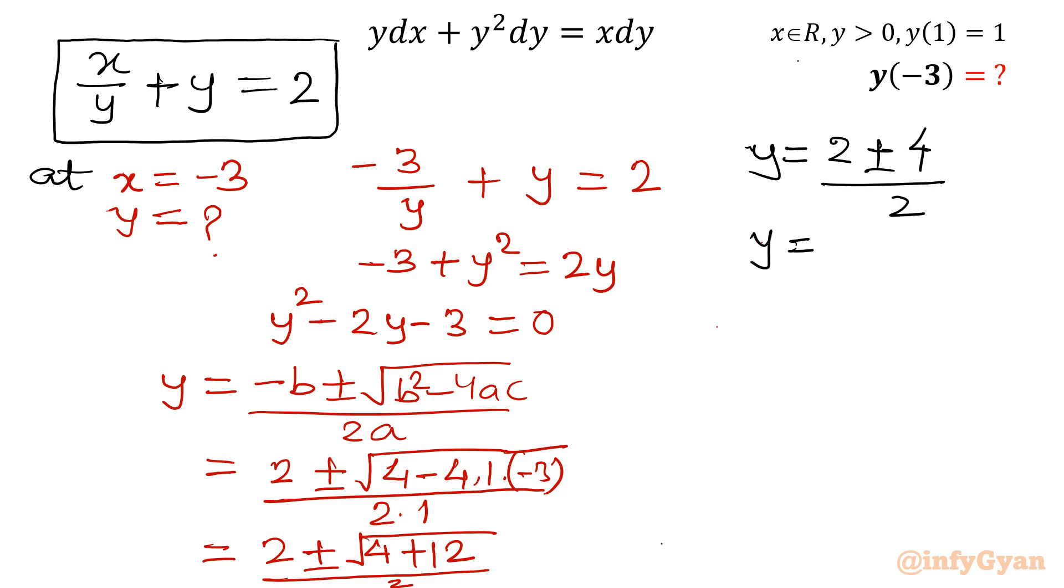So if I will consider plus, then 6 over 2. If I will consider minus sign in between, then minus 2 over 2, from where we will get 3 and negative 1. There are two values. Now one important point is also given in the question that y is always positive. So what we will do? We will reject minus 1.